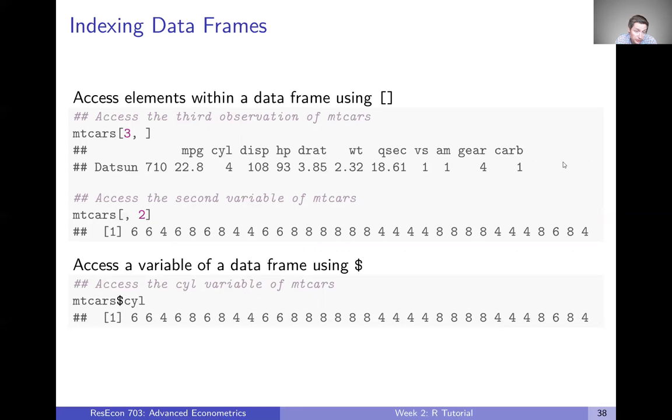We also might want to pull out just a column, we might want to access the cylinder variable, for example. And we can do that by pulling out columns just like with a matrix. So mtcars, and then in the bracket, a blank and then comma two is going to pull out the second variable, which in this case is cylinder. And so now we just have this vector of the number of cylinders.